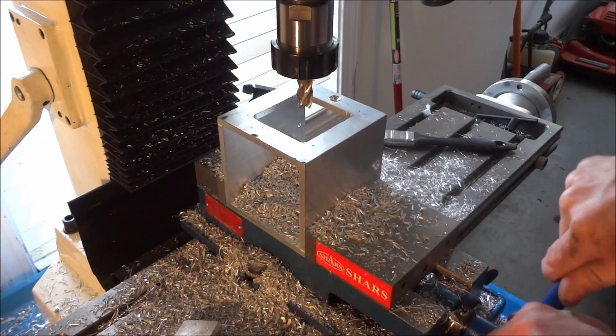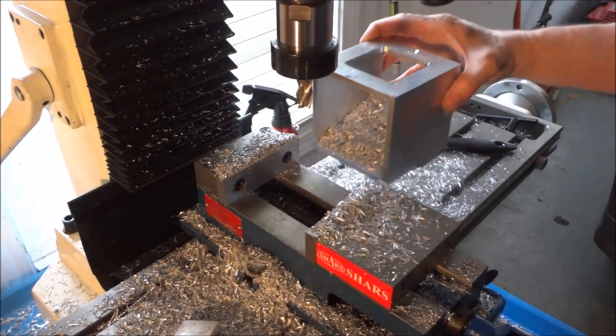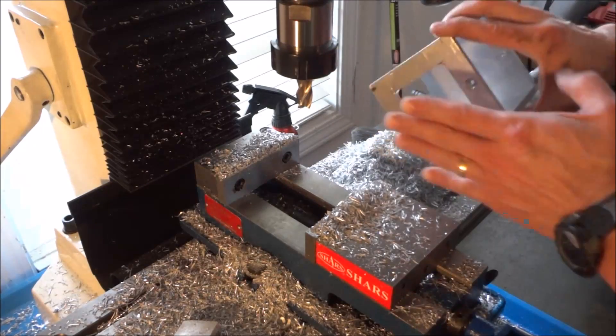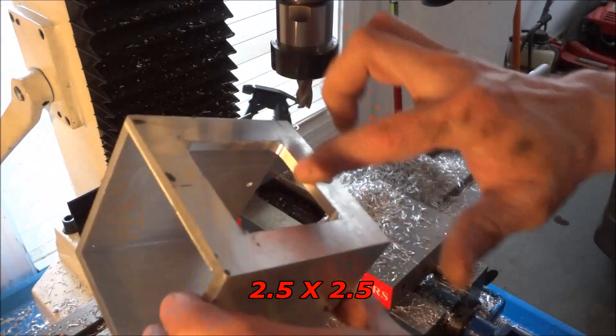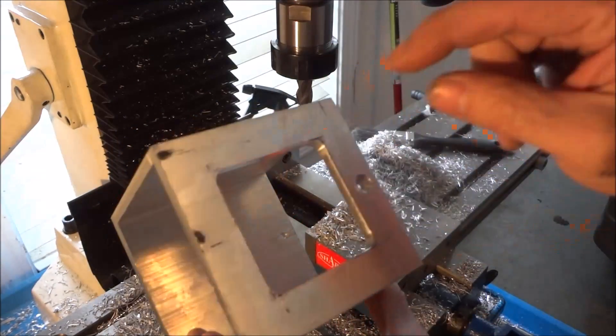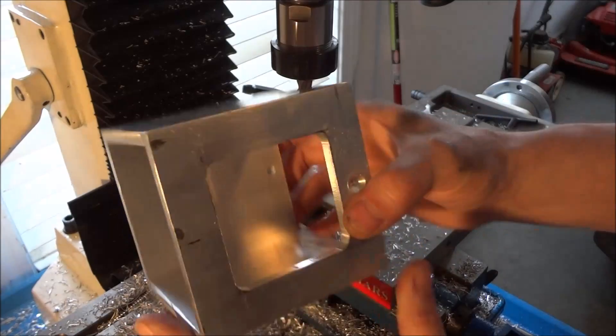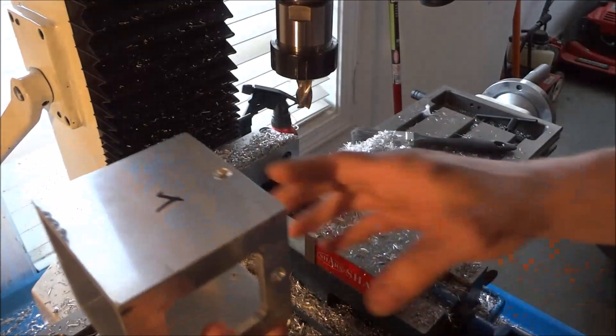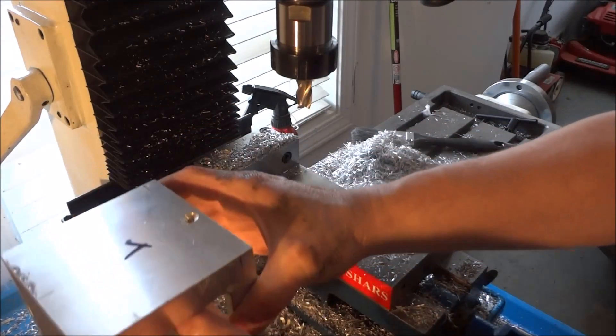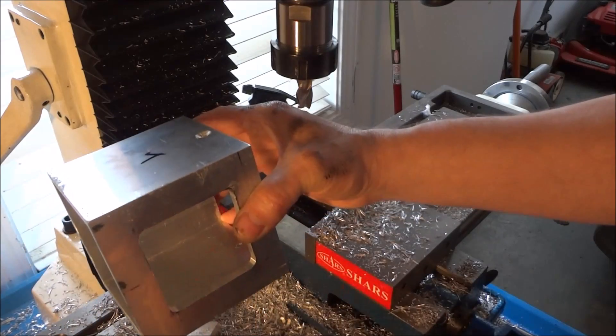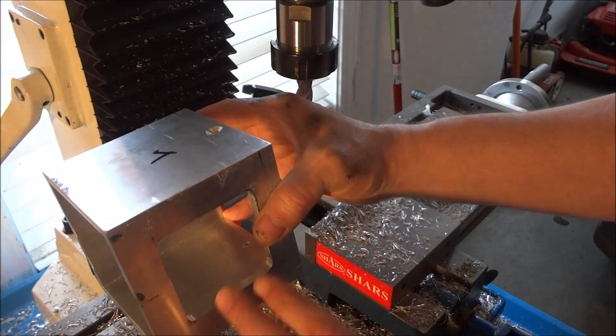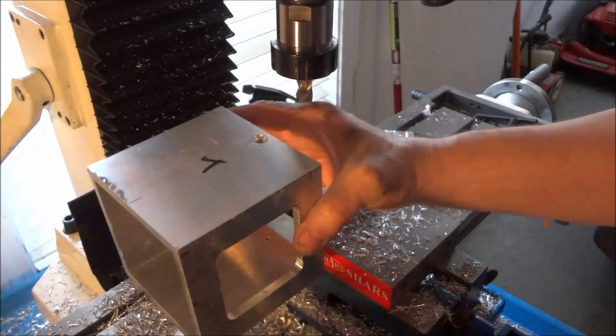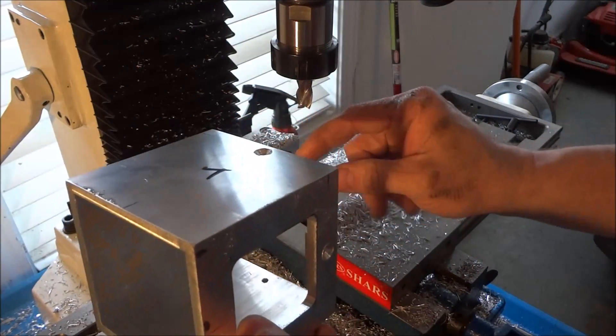So I've got the cut out done. Remember these measurements for this cut out are not real critical. It's just an access hole so you can get in there and tighten your coupling up. I did put it on the front side so that I can access it and I'm not too worried about it because this will all hopefully be covered once I get done.